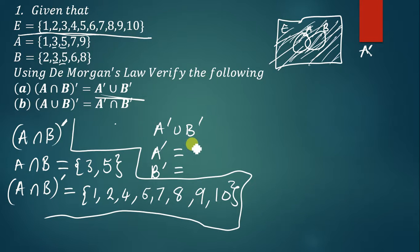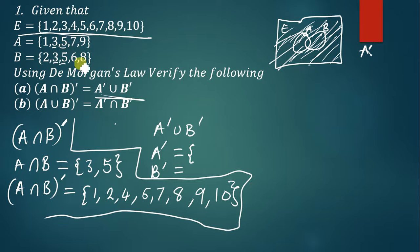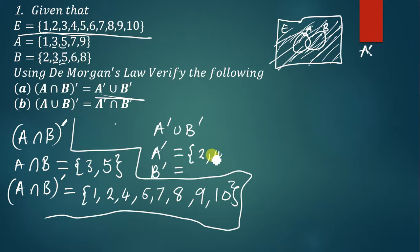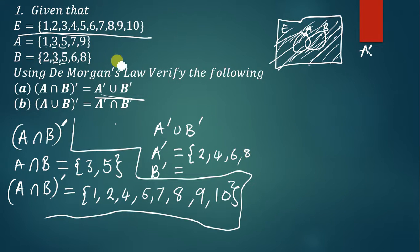Let's list A'. A' is the set of elements in the universal set excluding those in A. Going through: 1 is in A so we skip it; 2 is in the universal set but not in A so we write 2; 3 is in A so we skip it; 4 is not in A so we write 4; 5 is in A so we skip; 6 is not in A so we write 6; 7 is in A so we skip; 8 is not in A so we write 8; 9 is in A so we skip; 10 we write. So A' = {2, 4, 6, 8, 10}.